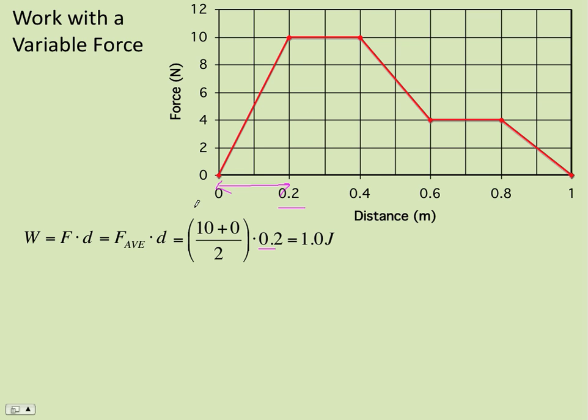This is a good way to do it. It works, but only if this line is straight is it exact. And so we want to look at a more general idea. The work is the area under the curve is the way it's usually stated. They really mean the area between the curve and the x-axis. And so for this first 0.2 meters of the motion, it would be the area of this triangle.